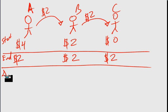And now if I do the change, the change in money, which is final minus initial. Person A lost $2, so negative $2. Person B, no change. And person C gained $2.